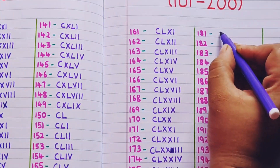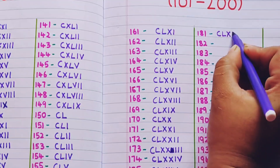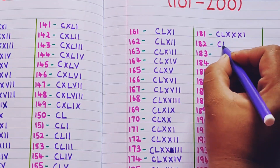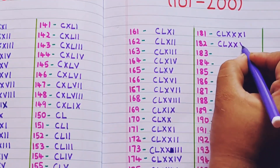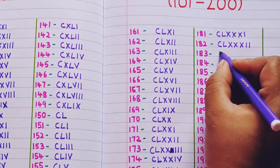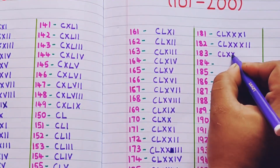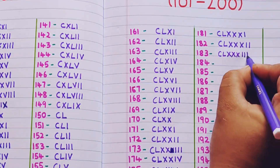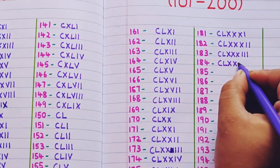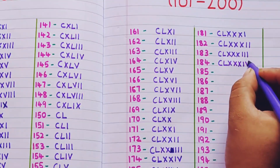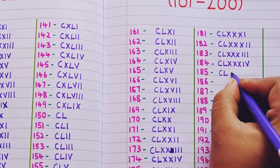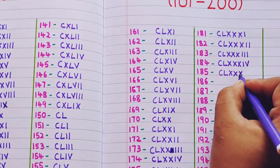181 is CLXXXI, 182 is CLXXXII, 183 is CLXXXIII, 184 is CLXXXIV, 185 is CLXXXV.